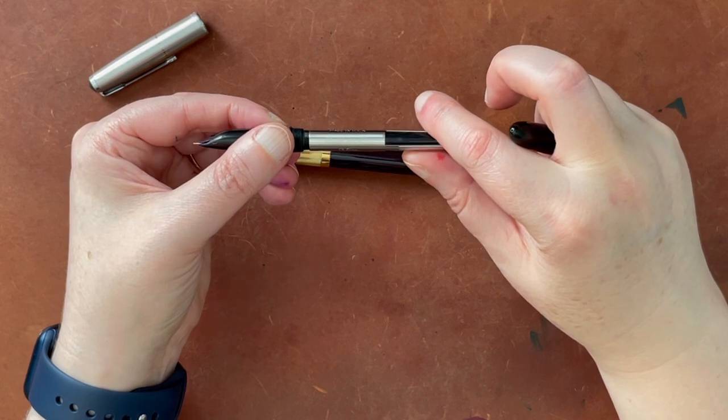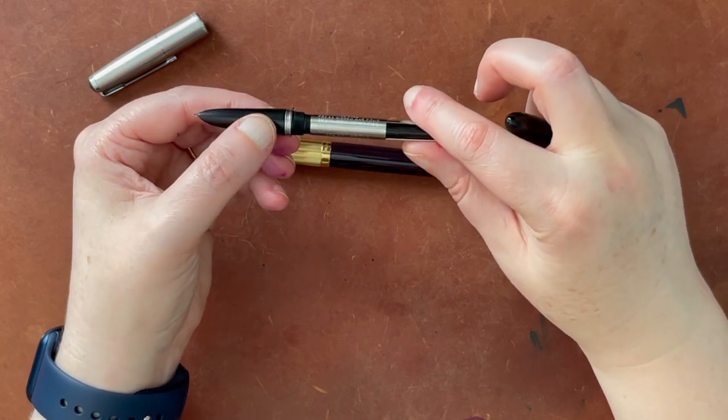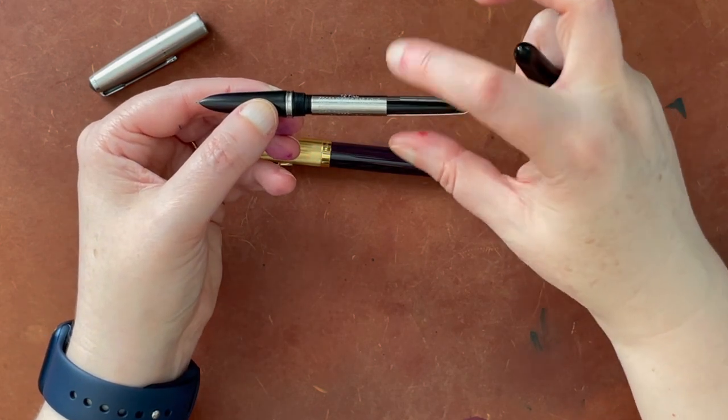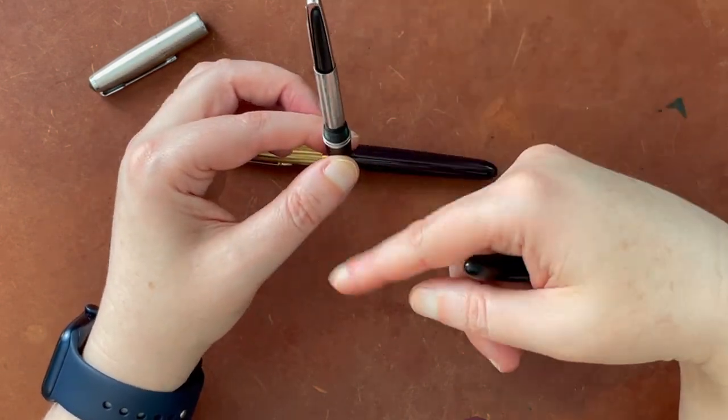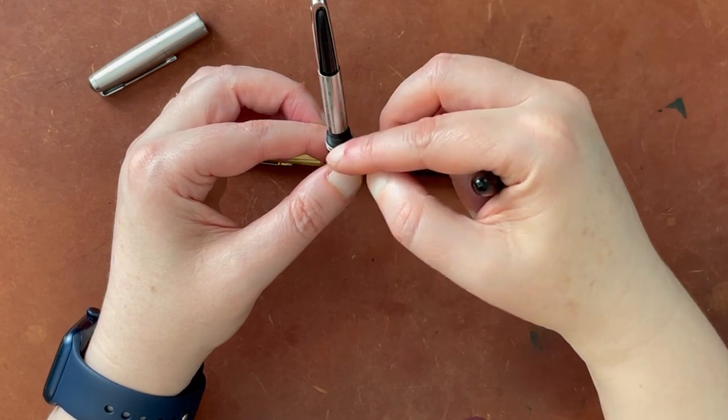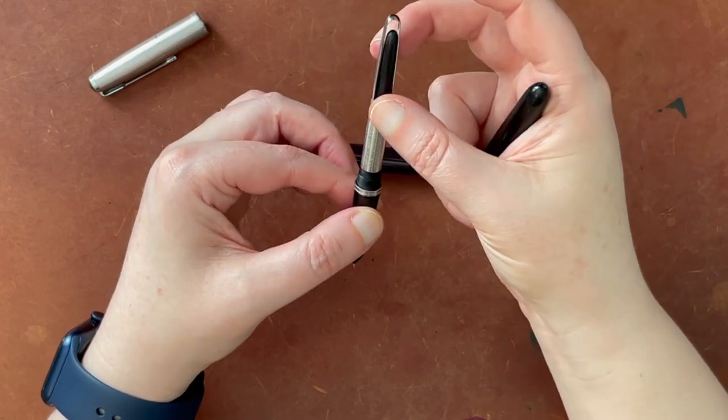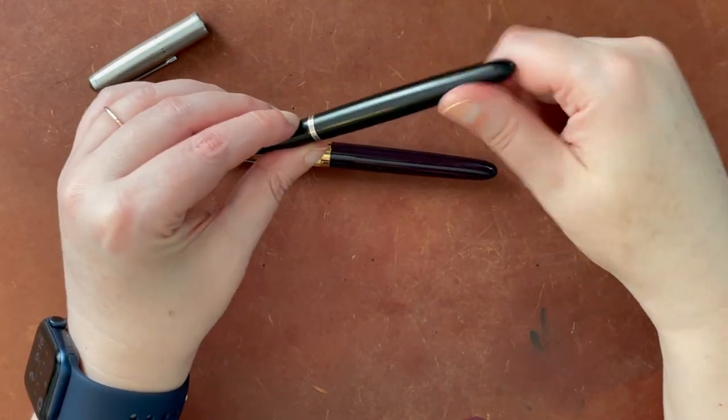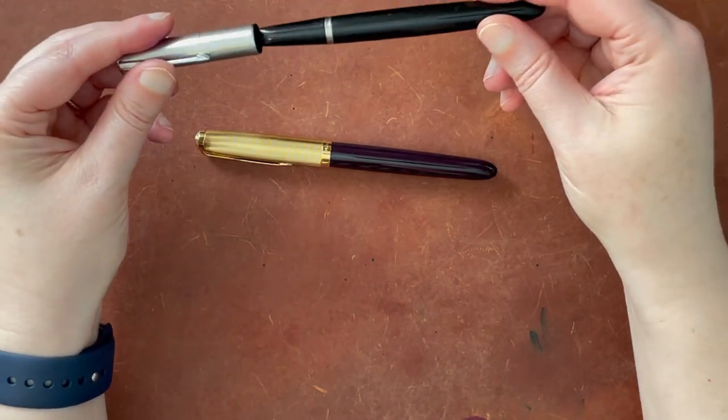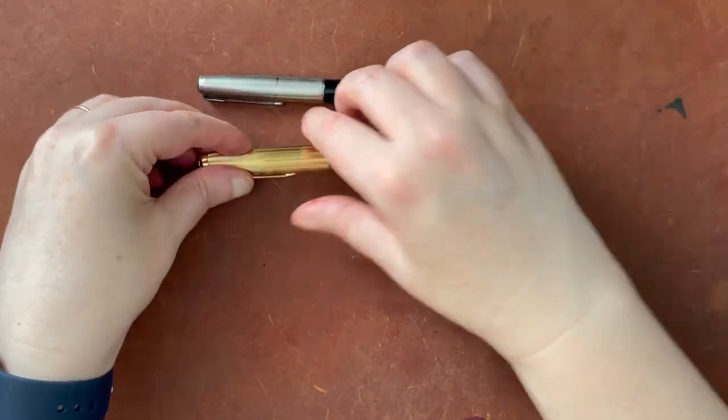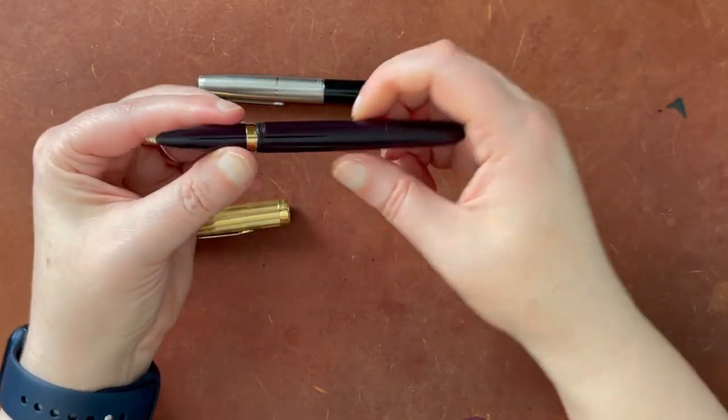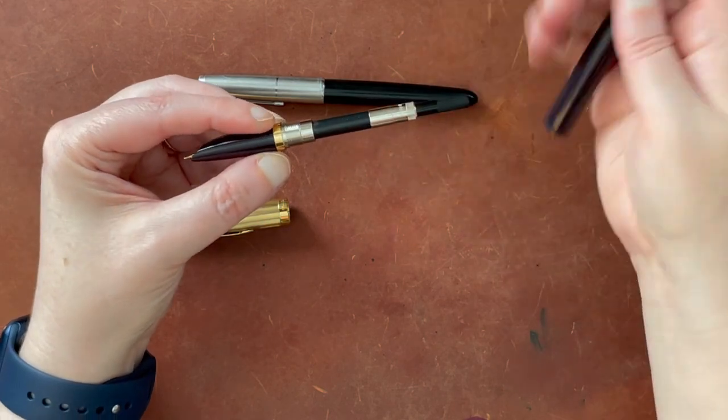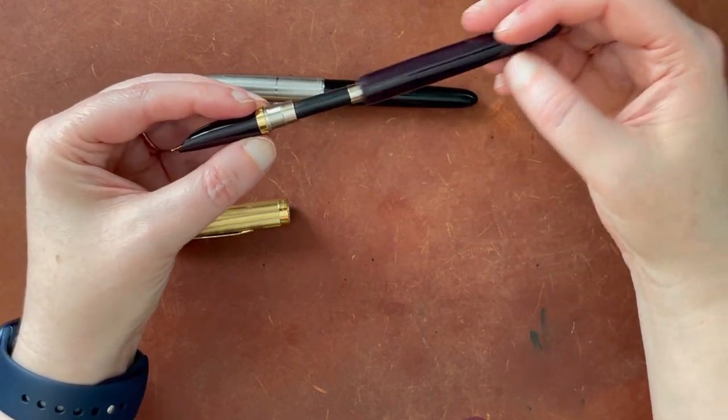The filling mechanism is also different. So with this one there is a little aerometric, I think that's it, but basically you squeeze in once you're in the bottle of ink, you squeeze squeeze squeeze like three different times and it'll pull the ink up into this little sack here. Personally I think this is a very inefficient filling system and I was actually really happy that they changed it on the new one to just be a converter.